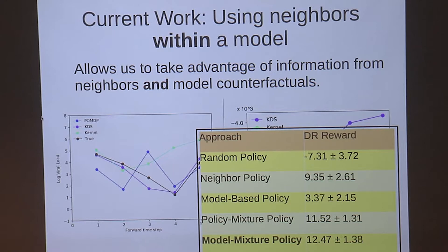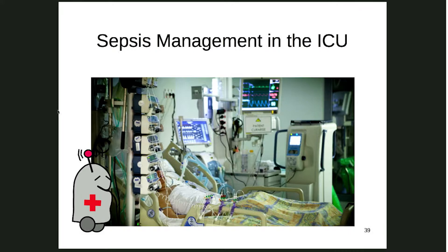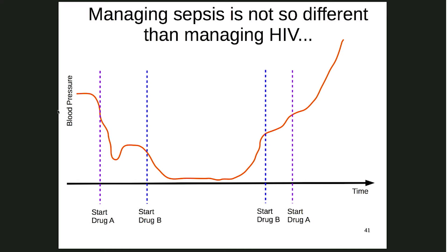Interpolating at the model level allows us to get even better policies — this is a work in progress. A natural question was: where else can we use this? HIV is one place, but this notion is quite natural: combine book learning with experience to make the best decisions. The place we tried applying this was sepsis management in the ICU. As a methods person, I look at HIV as a trajectory of some numbers with drugs, and I just change 'viral load' to 'blood pressure' — it looks the same!